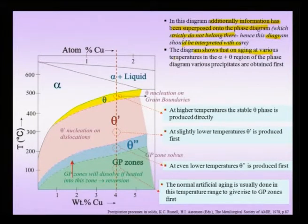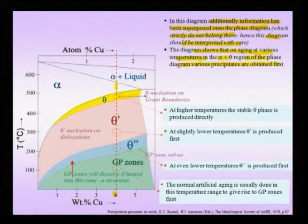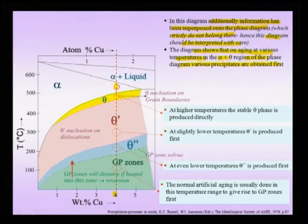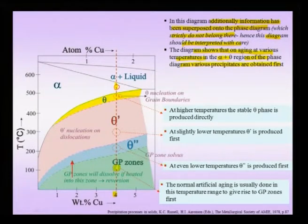This diagram shows that on aging at various temperatures in the alpha plus theta regime, various phase states are obtained. Suppose we take aluminium 4% copper, solutionize it in the single-phase alpha field, then quench to room temperature — obtaining a supersaturated solid solution plus excess vacancies. When aged in the low green temperature regime, GP zones form first, which later transform into theta double prime, then theta prime, and finally theta if we wait long enough.